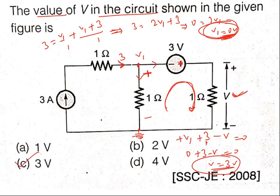To recap: this is a simple circuit. If there is more than one node, reduce the circuit and apply KCL to get the answer quickly. Here there are only two nodes — one acts as ground, and at the other node you apply KCL. The 3 amp current is entering, so 3 equals V1 by 1 plus (V1 plus 3) by 1 ohm, which simplifies to V1 equals 0 volts.